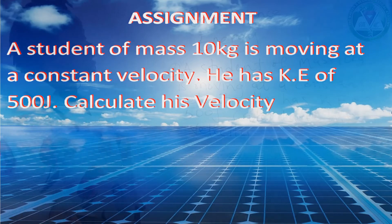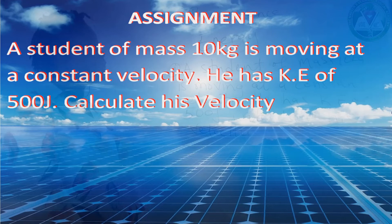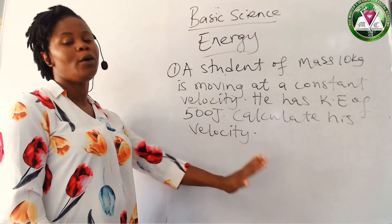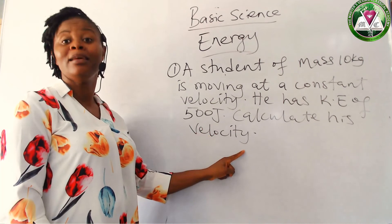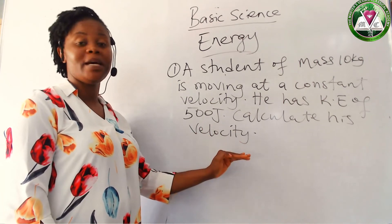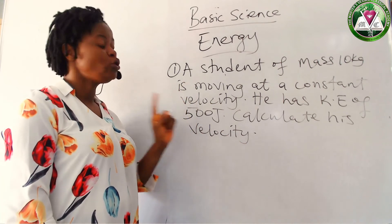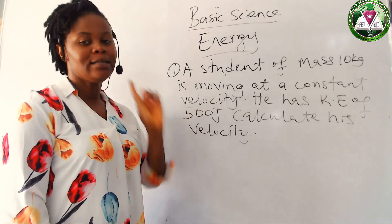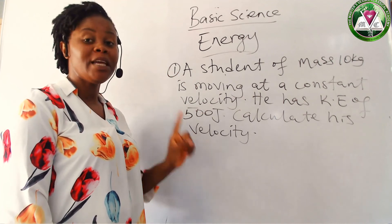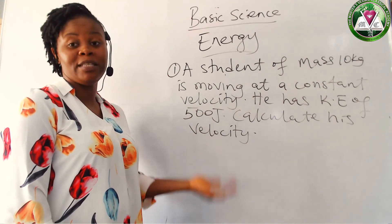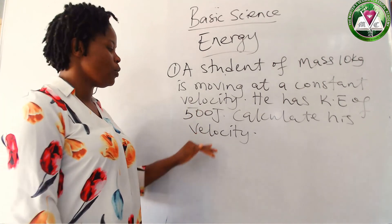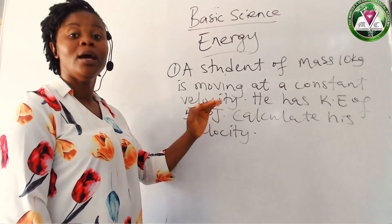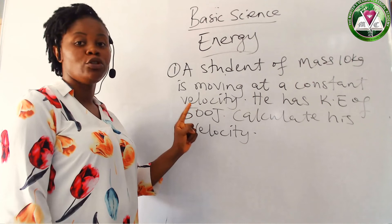The assignment: a student of mass 10 kg is moving at a constant velocity and has kinetic energy of 500 joules. Calculate his velocity. You are just applying the same formula and the same method — you are calculating velocity using the same formula. Don't forget to put your units. The correct unit for velocity is meters per second. If you don't put the unit, you will not score. Make sure you put your unit.